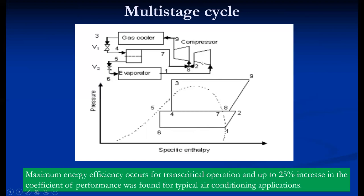This multi-stage cycle is mainly used for refrigeration applications where temperature limits are wider. Two compressors are used, and it also reduces compression work because instead of compressing the whole refrigerant in a single stage, compressing in two stages reduces work. Also, point 4 shifts towards the left, increasing the refrigeration effect. The cumulative effect increases refrigeration effect as well as reducing work input. This stimulative effect leads to an increase in COP of 25%. This is a multi-stage cycle in a two-stage compression system.